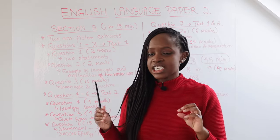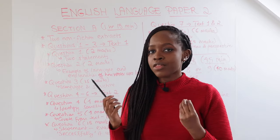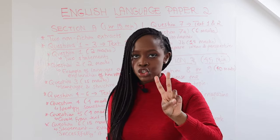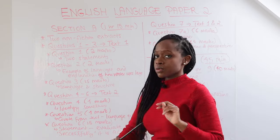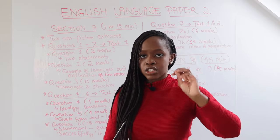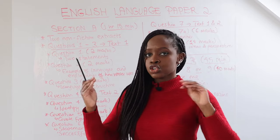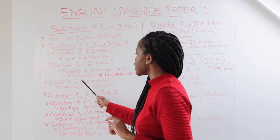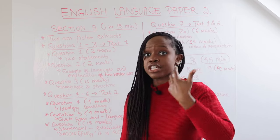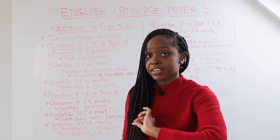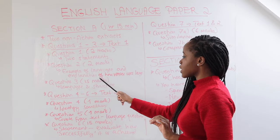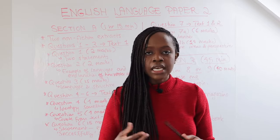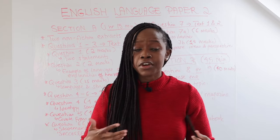Now I'd like to go into detail about what to anticipate for each question and the mark weighting. Question one relates to text one and is worth just two marks — you answer using two brief statements and you're required to support your response but you don't quote. Question two is also worth two marks. You're asked for an example of language relating to a specific line, then you explain how the writer uses language — things like alliteration, metaphors, similes, nouns, verbs, and adjectives.